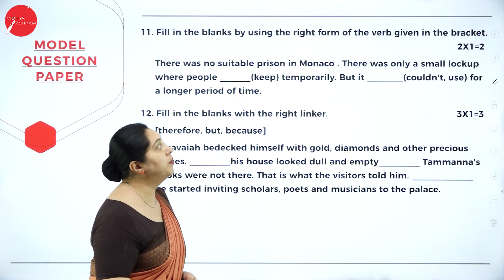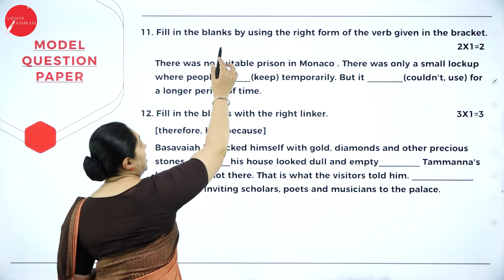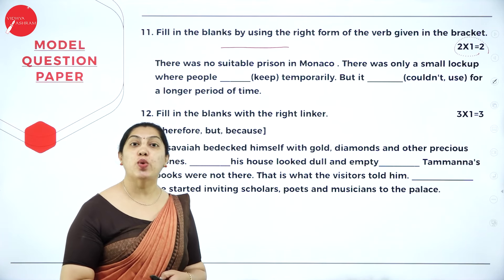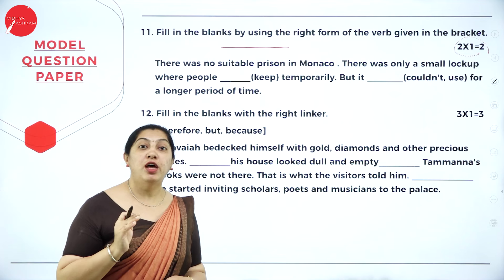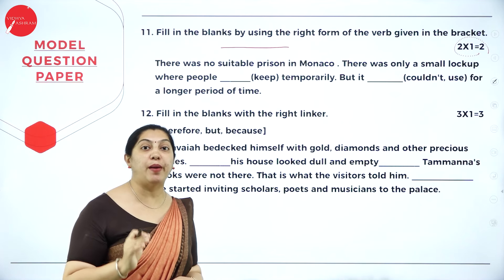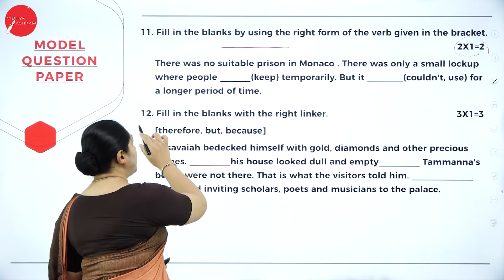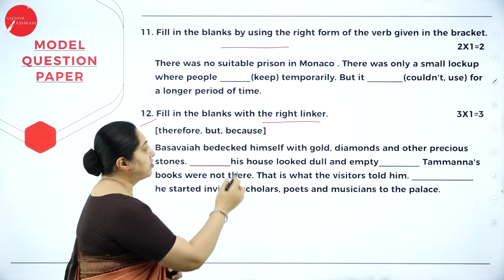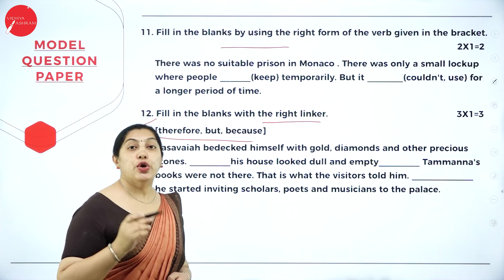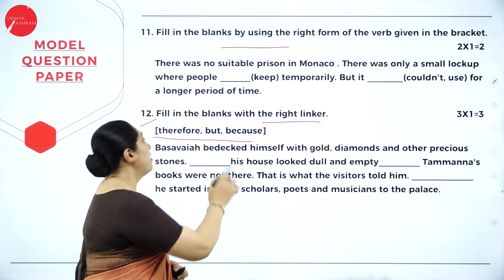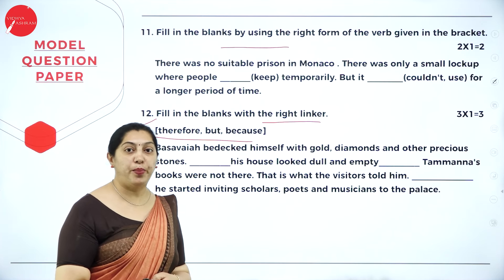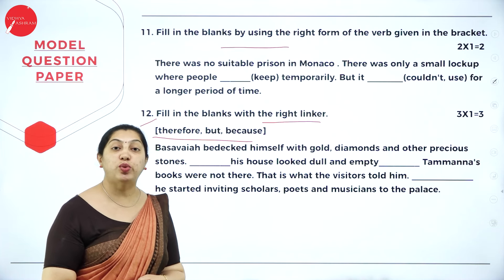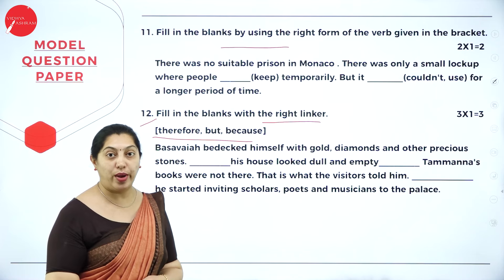Question number 11: fill in the blanks using the right form of the verb given in brackets. This question is for two marks — there are two blanks, each carrying one mark. Questions are picked from chapters in your textbook, so make sure you read the lessons. Question number 12: fill in the blanks with the right form of the linker, for three marks. You have three blanks; read the question thoroughly and fill them using the words given in the bracket. For grammar questions, write only the answers with the correct question number.